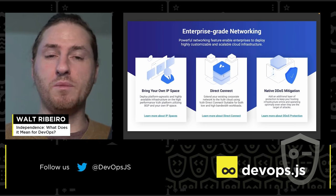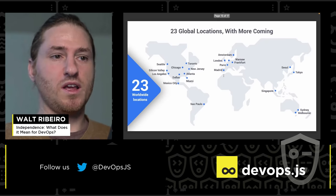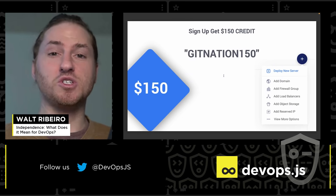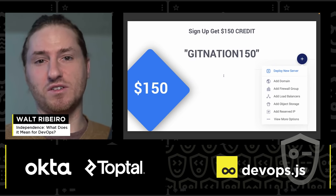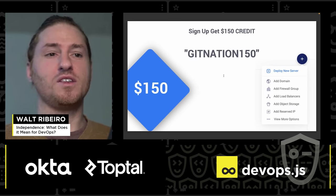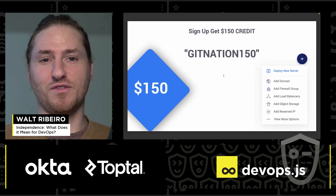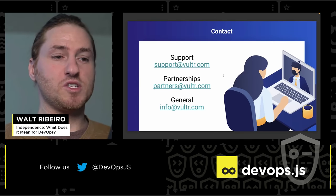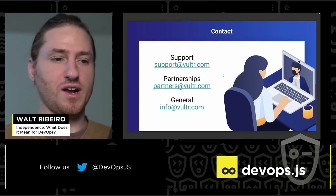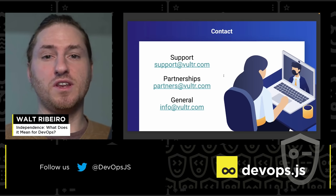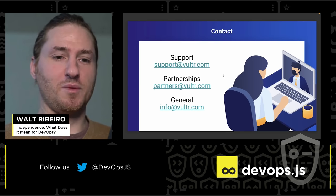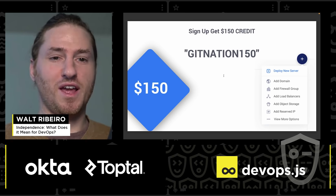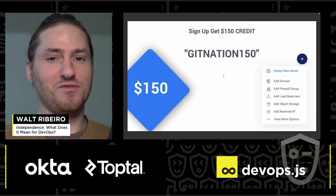As mentioned, we have 23 locations with many more coming. To get started on Vulture, use coupon code GETNATION150 to start with $150 of free credit. To contact us you can email support@vulture.com, partners@vulture.com, or for general inquiries info@vulture.com. That's it — don't forget to try Vulture with this $150 free credit using GETNATION150. Thanks so much and we hope you give Vulture a shot!